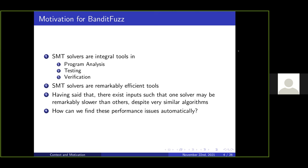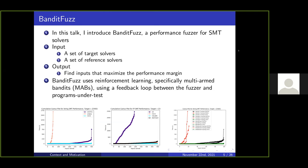It would be nice if we could have a tool that could find these inputs completely autonomously. To this extent, we propose BanditFuzz, a performance fuzzer for SMT solvers. The input is a set of target solvers and a set of reference or baseline solvers. The output is a benchmark that maximizes the performance margin between the target solvers and the reference solvers.